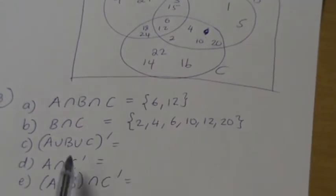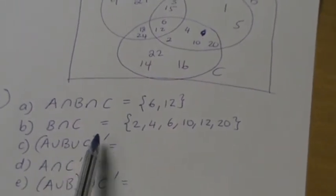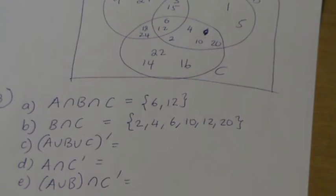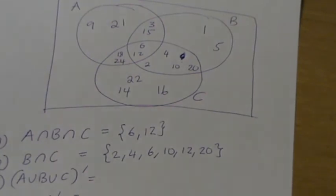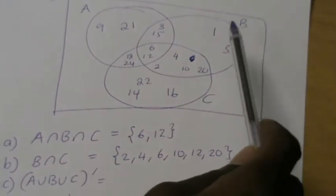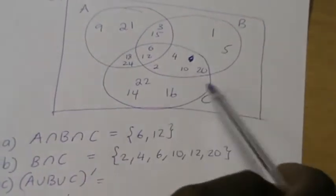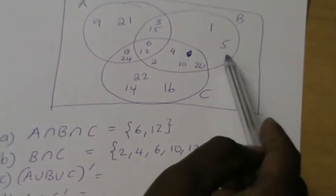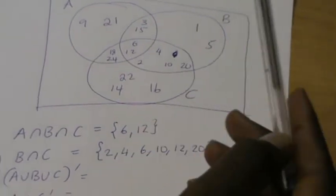Then A union B union C complement. That means you combine all the elements in A, in B and in C, and then you see what is missing. I think that's something I forgot in 6.2 when I was making my Venn diagram. I didn't check that, but we can check it now and just correct our answer there. So I need to make sure that all the numbers from 1 to 24 are in this Venn diagram. So I have 1, 2, 3, 4, 5, I have 6, I don't have 7.